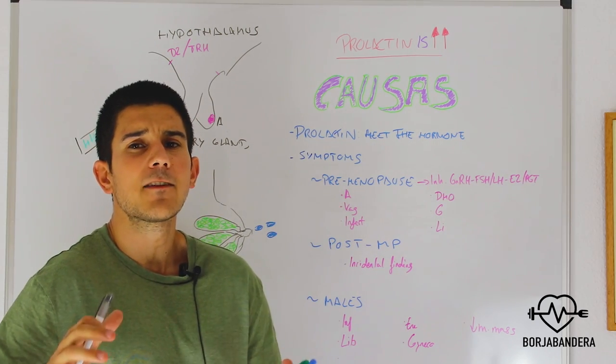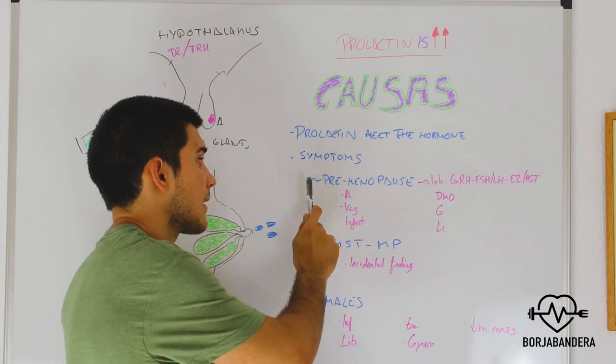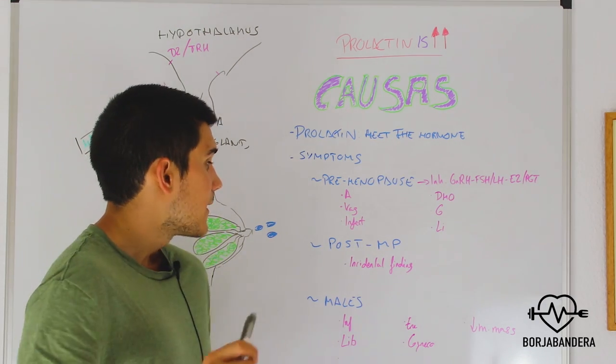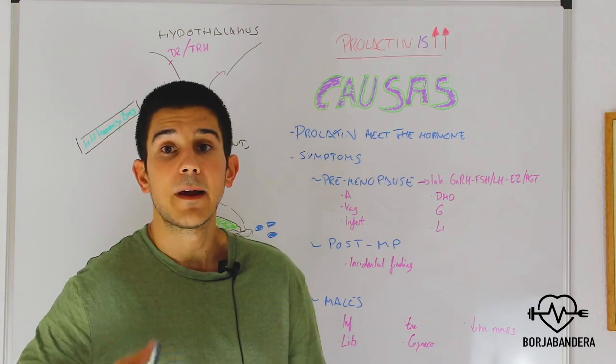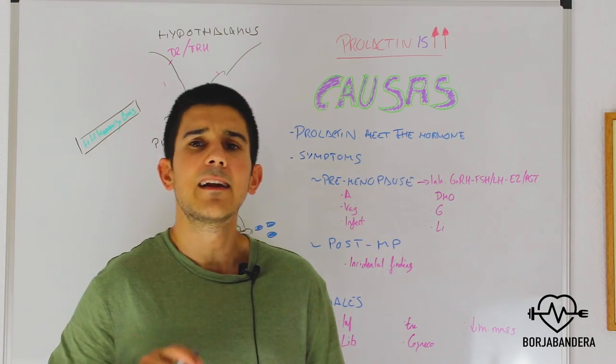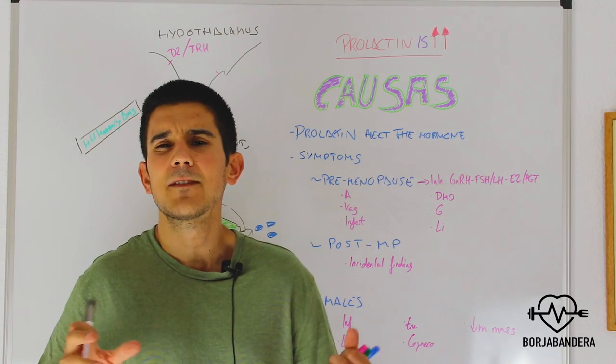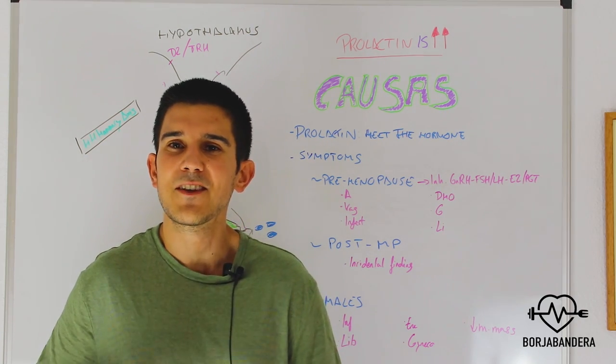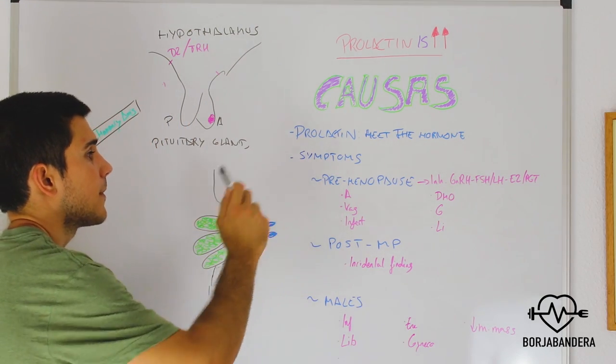And now we will go through all the symptoms high levels of prolactin can produce in the body. And we will divide, we will consider three different populations. The first one is pre-menopausal women, that is, fertile women. Then we will consider post-menopausal women, women after menopause. And then we will consider males because we are a little bit different than females in this problem. We have different symptoms and we have to be considered separately than women.